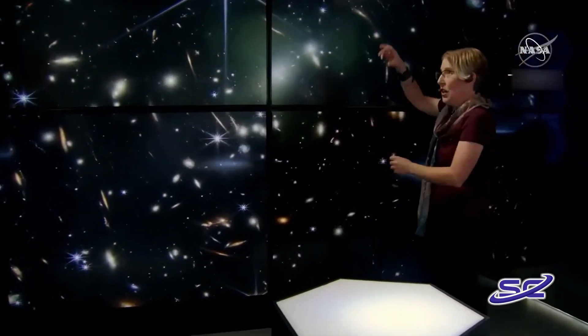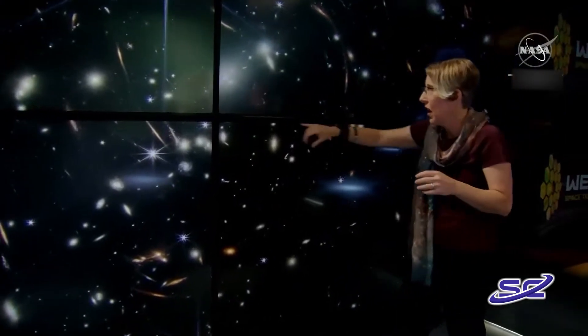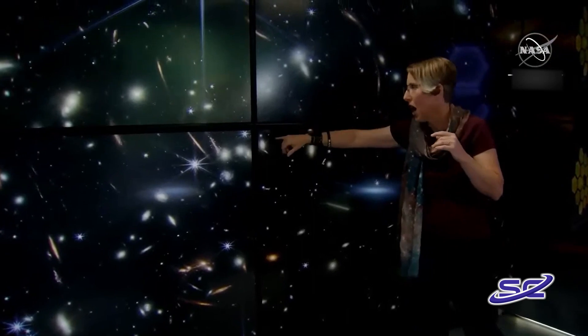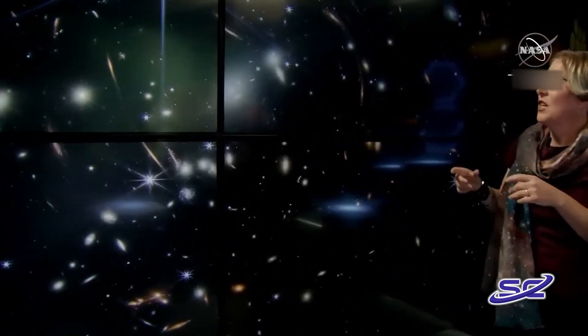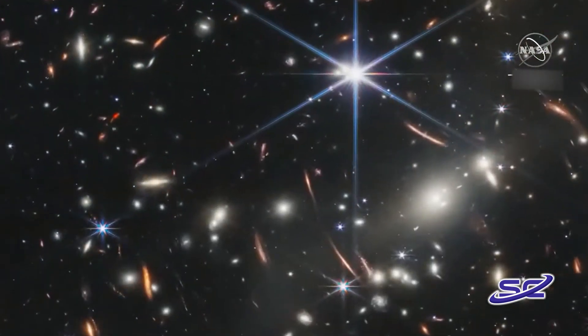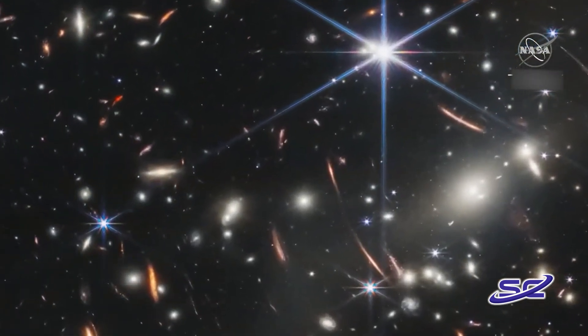There are galaxies here in which you're seeing individual clusters of stars forming, popping up, just like popcorn. And then we also see in the background of this image kind of littered like jewels all over the back are these faint red galaxies.